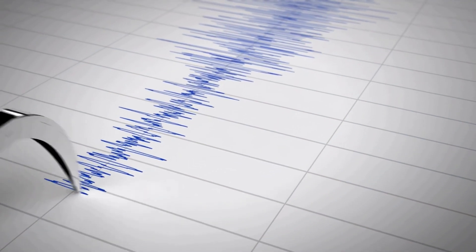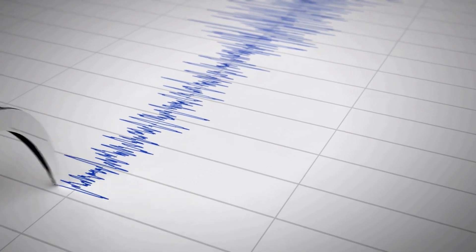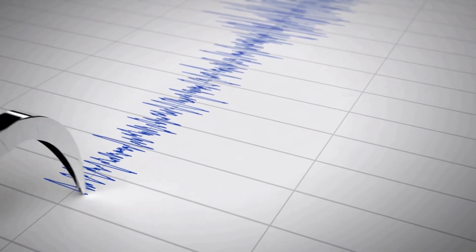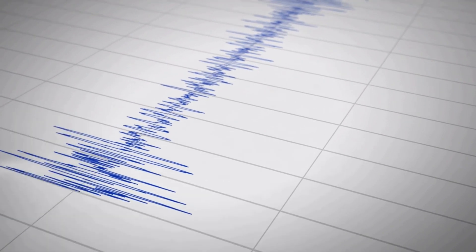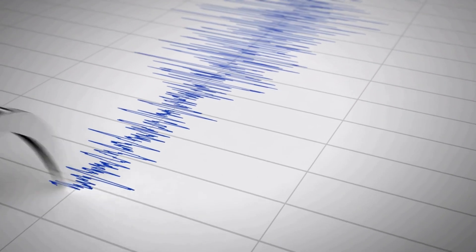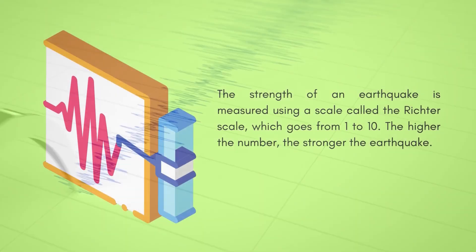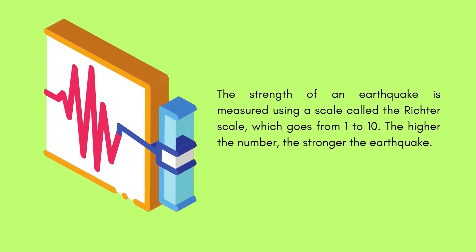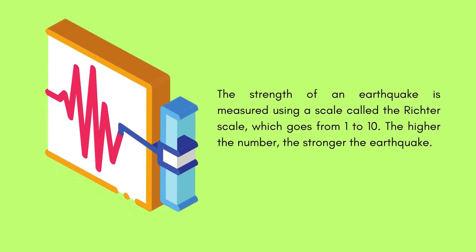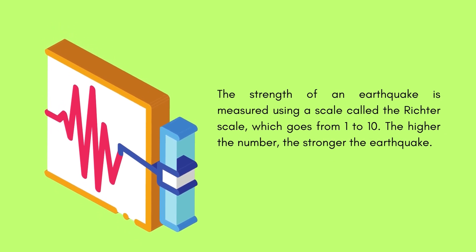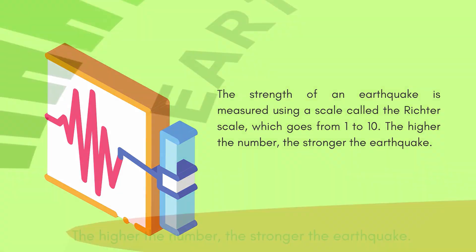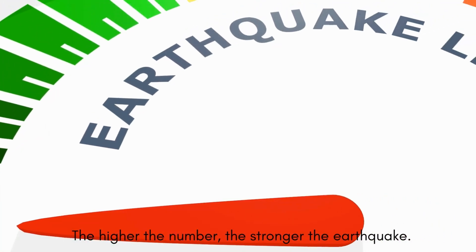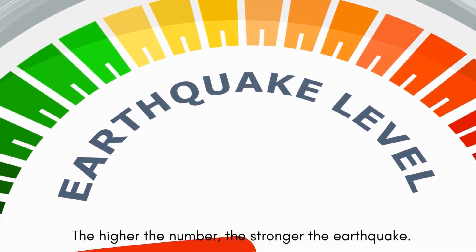Scientists measure earthquakes using a tool called a seismometer, which records the movements on the earth's surface during the earthquake. The strength of an earthquake is measured using a scale called the Richter scale, which goes from 1 to 10. The higher the number, the stronger the earthquake.